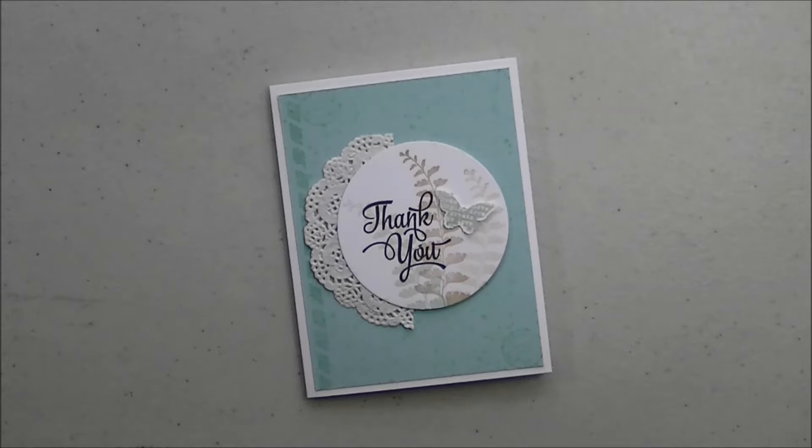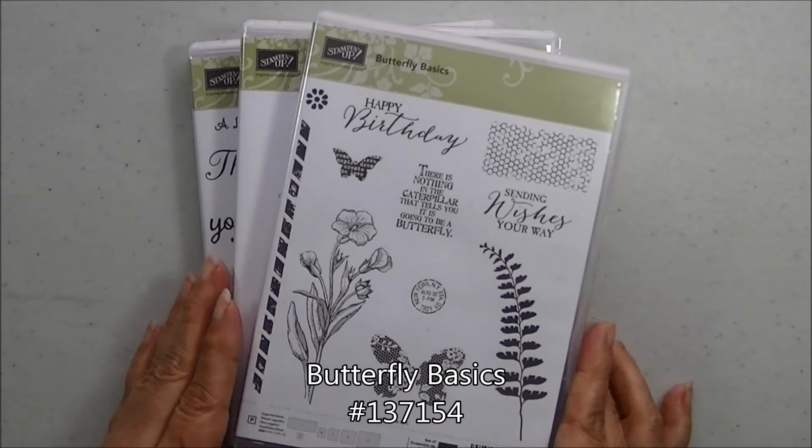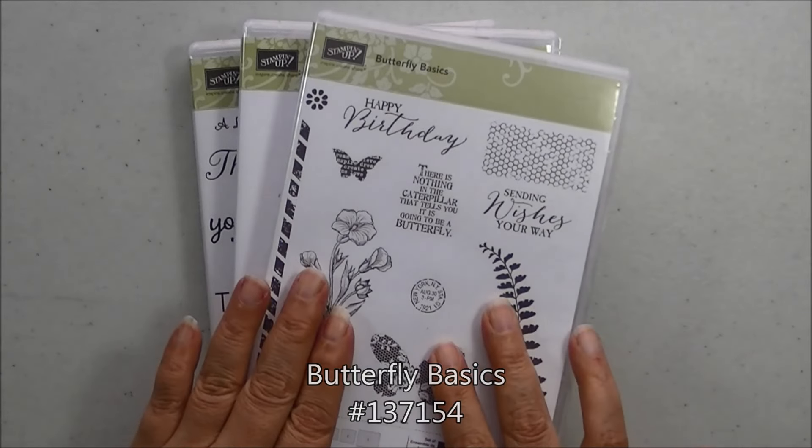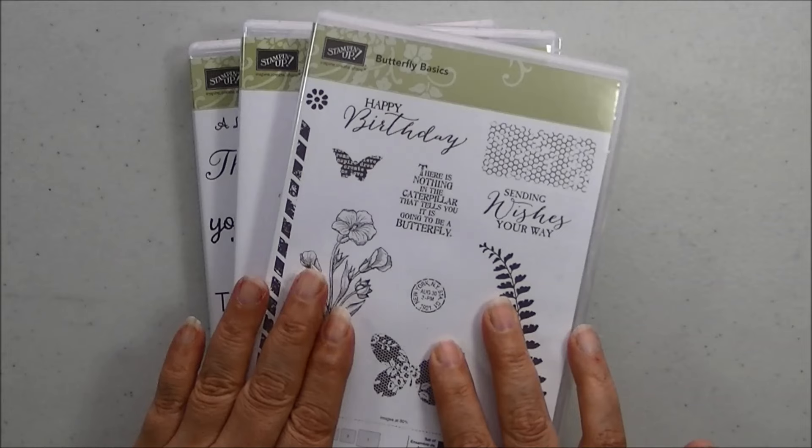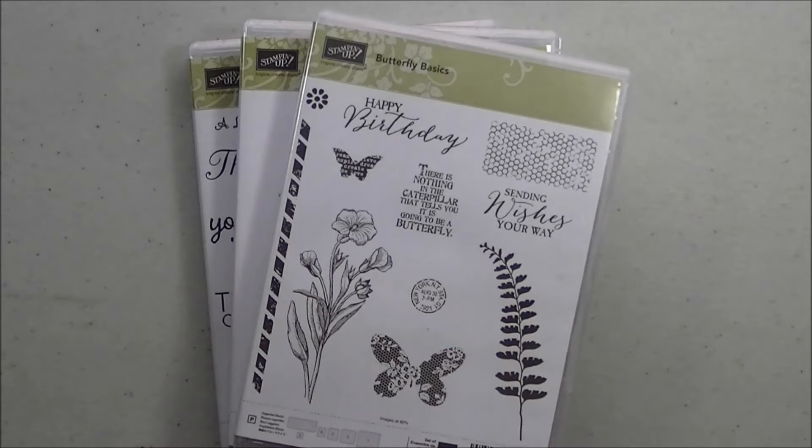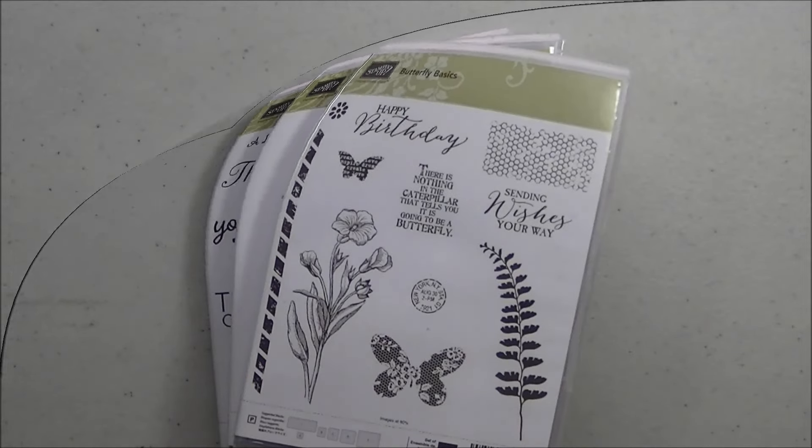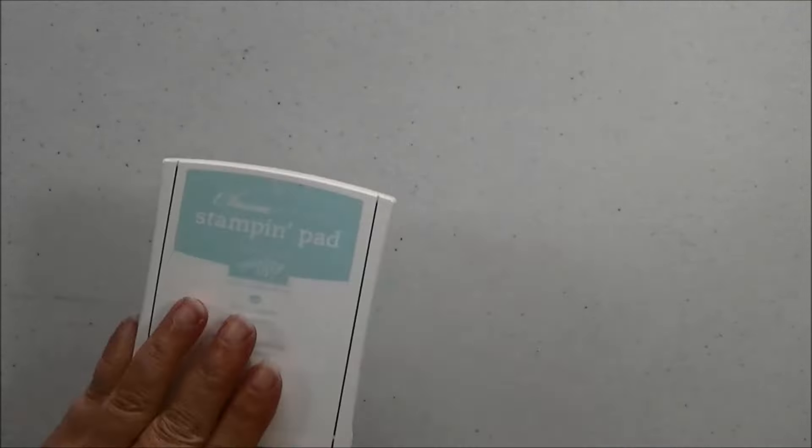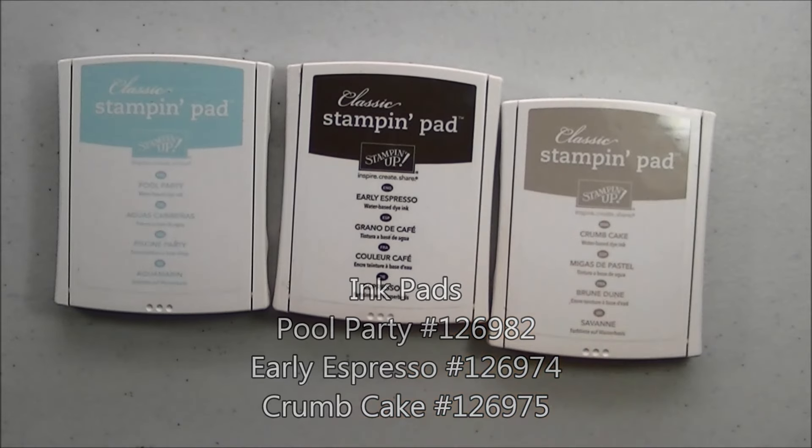The stamp sets that we're using today are One Big Meaning, Gorgeous Grunge, and Butterfly Basics. Because you know I took out Butterfly Basics, it was collecting dust on my shelf and I've forgotten how much I absolutely love it so we're using it again in today's video. The ink pads that we're using today are Pool Party, Early Espresso, and Crumb Cake.